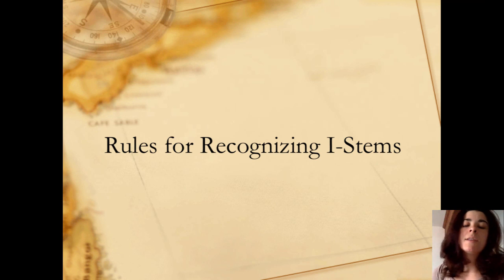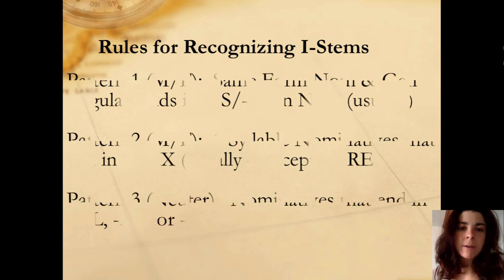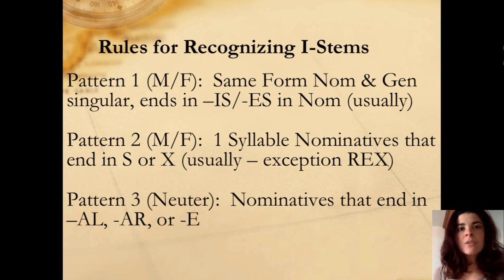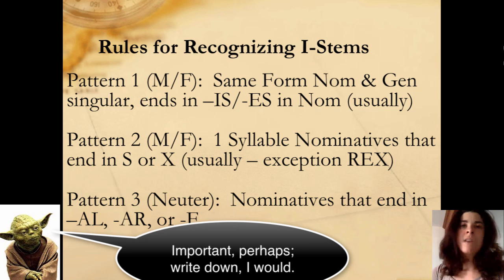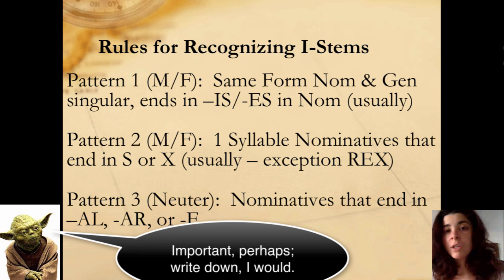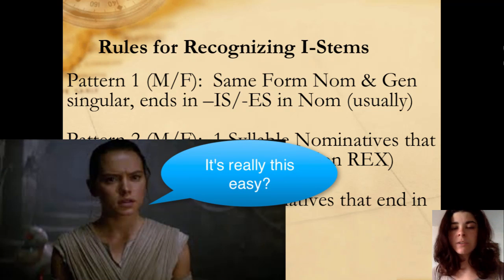Now let's take a look at some rules for recognizing i-stems. The basic rules are really patterns that show up. The first pattern is masculine-feminine: normally it's when you have the nominative ending in IS or ES and it looks almost exactly the same as the genitive. So when you have canis, canis — which means dog — it's the same in both the nominative and genitive form. Sometimes you see ES instead of IS in the nominative, but otherwise it will be exactly the same.